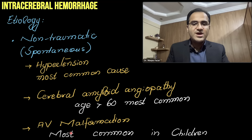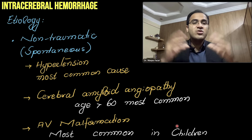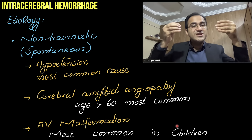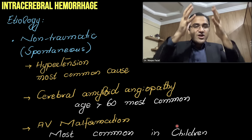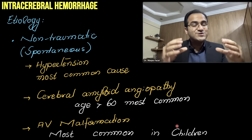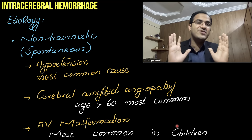AVM (arteriovenous malformation) is the most common cause in children. Normally, arteries split into arterioles, then capillaries, then venules, then veins. In AVM, the artery is directly connected to the vein with no interconnecting capillaries, arterioles, or venules. There is increased risk of rupture with elevated blood pressure in these AVMs, resulting in intracerebral hemorrhage.